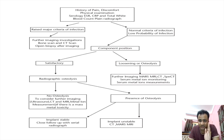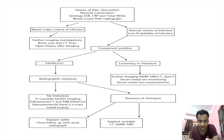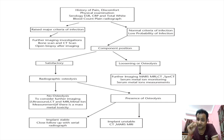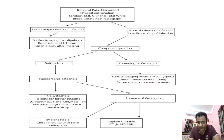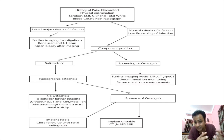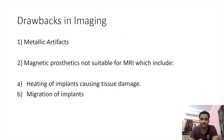This is a gross flowchart for evaluation: starting with history of pain/discomfort, go for serology (ESR, CRP, total WBC) and a radiograph. If there is raised major criteria of infection, further imaging with bone scan, CT scan, or biopsy should be done. If there is low probability of infection, assess component position. If satisfactory, look for radiographic osteolysis; if none, go for CT/MRI measurement. If loosening or osteolysis is found, use MARS protocol MRI, CT, or SPECT-CT. Finally, diagnose whether the implant is stable or unstable — stable means follow-up, unstable requires clinical intervention.